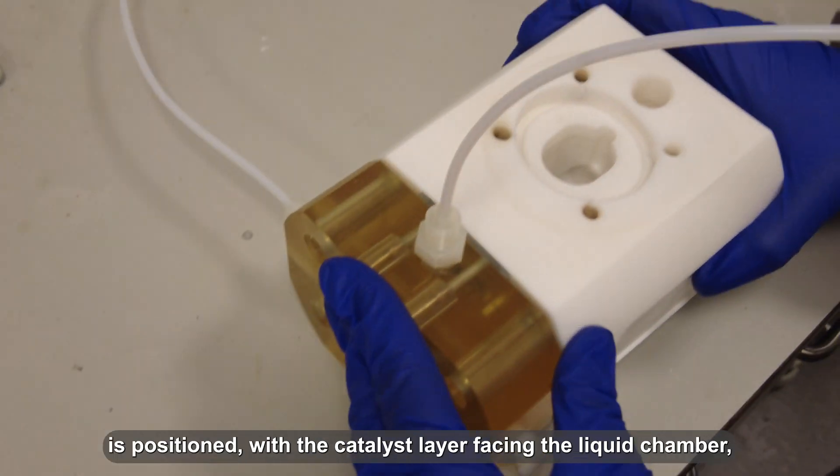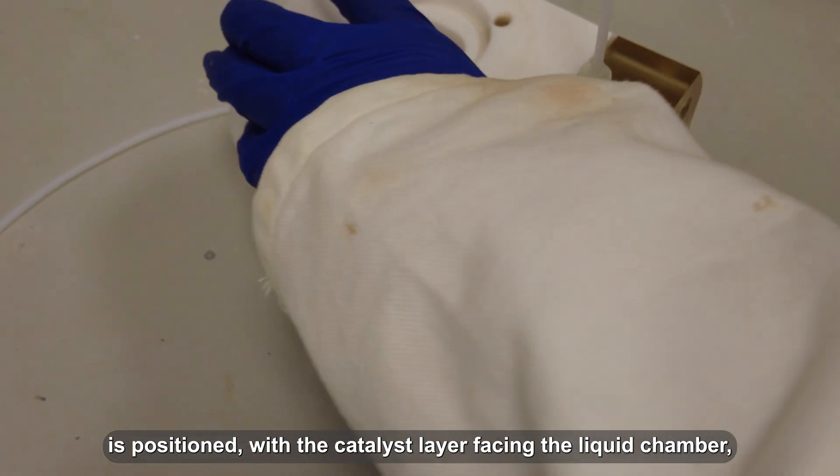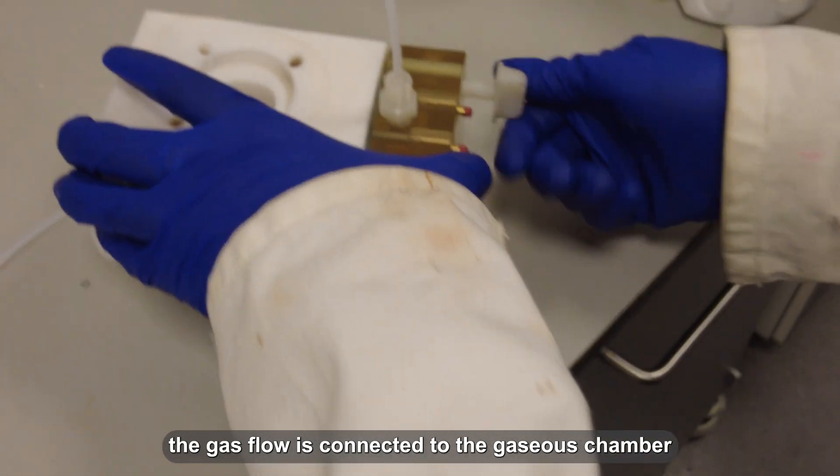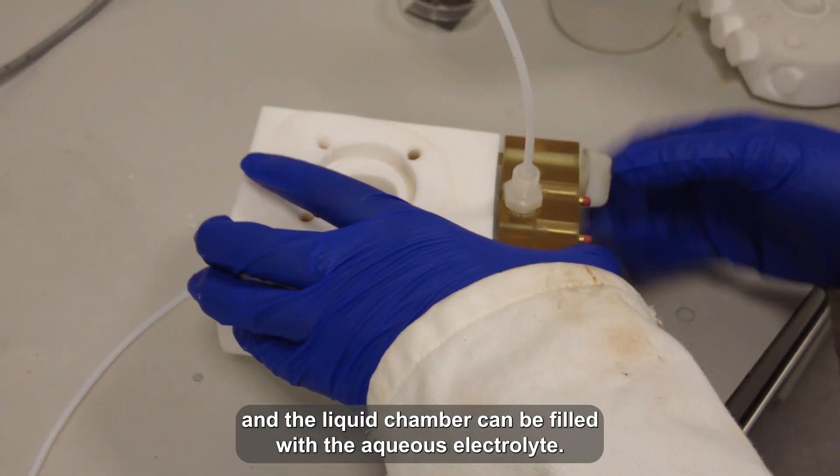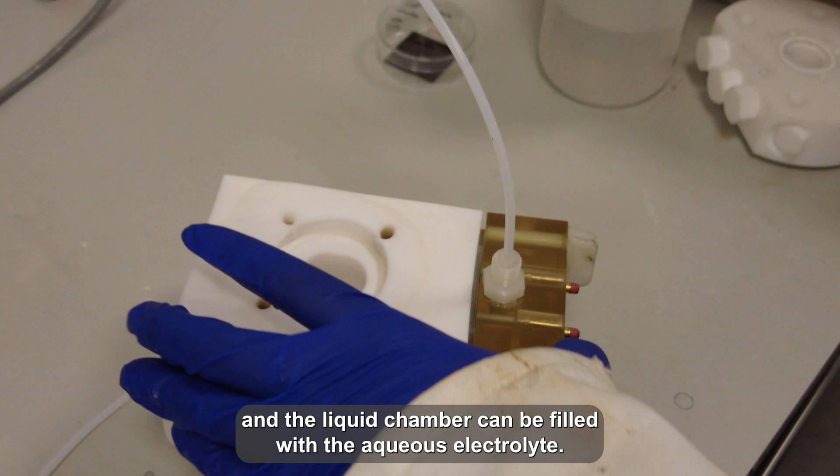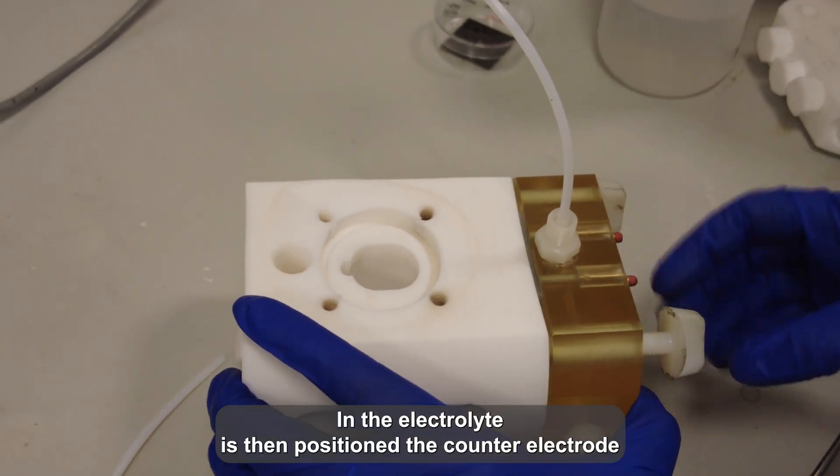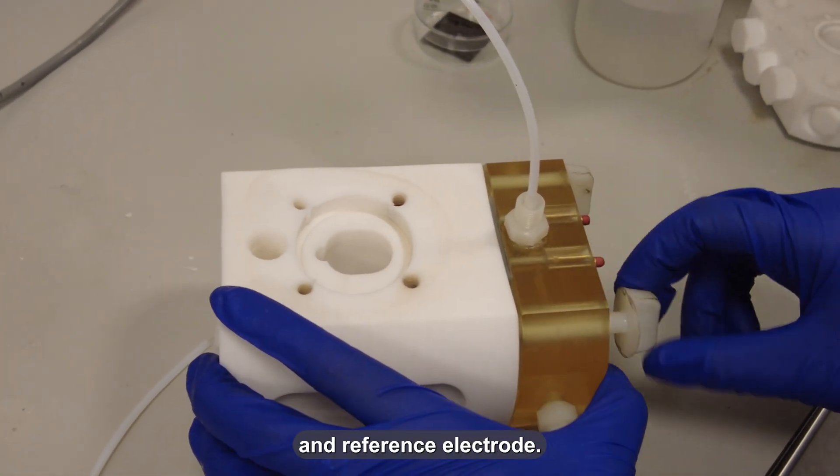Once the working electrode is positioned with the catalyst layer facing the liquid chamber, the gas flow is connected to the gas chamber and the liquid chamber can be filled with aqueous electrolyte. In the electrolyte, we then position the counter electrode and the reference electrode.